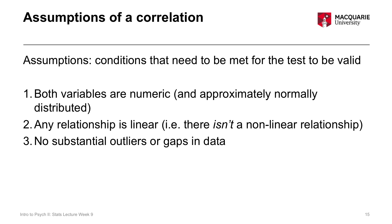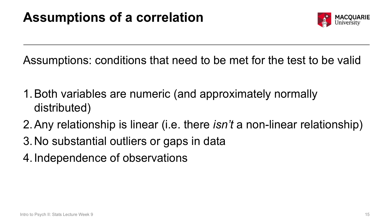The next assumption is that there are no substantial outliers or gaps — again, the scatterplot is key for assessing that. The last assumption is independent observations: we haven't sampled anyone twice, scores aren't repeated or related. This is met through sampling design, not a statistical check — it depends on how you obtained the data.